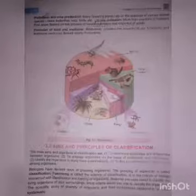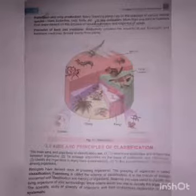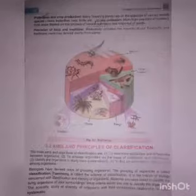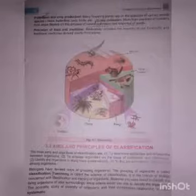Many human food crops depend upon the process of natural pollination. The last one is provision of food and medicine. Biodiversity provides the majority of our foodstuff, and we also obtain medicines from plants and animals.